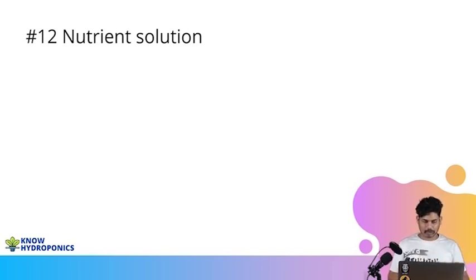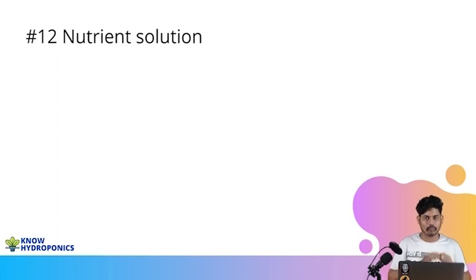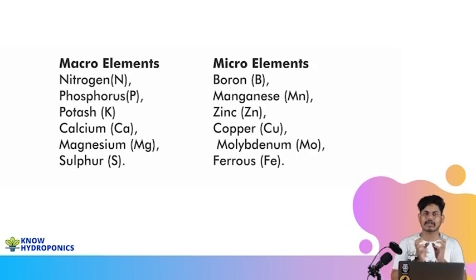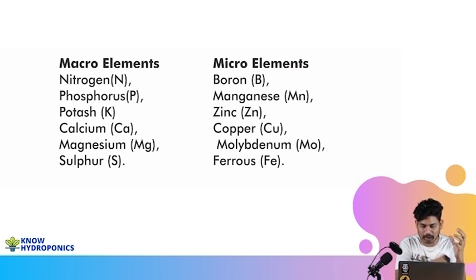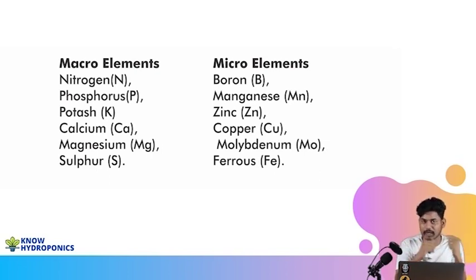Now let's talk about the most important part — the nutrient solution. When we talk about the nutrient solution, we talk about mainly two things: what nutrients we are giving to the plants, and these nutrients are either macronutrients or micronutrients. Macro elements are elements needed in large quantities, for example nitrogen, phosphorus, potassium, calcium, magnesium, and sulfur.